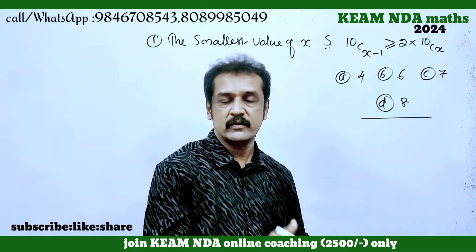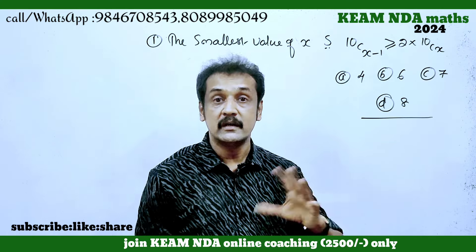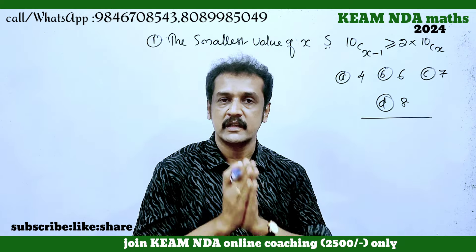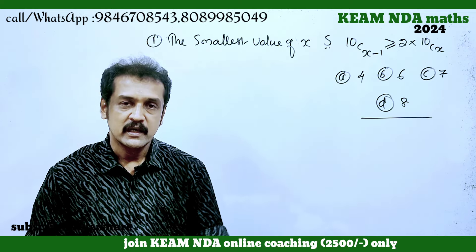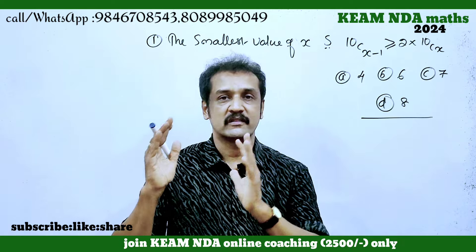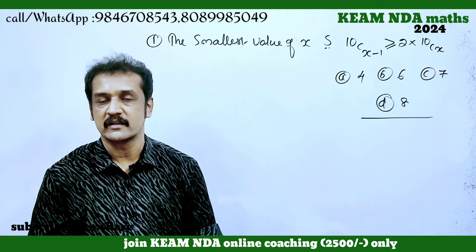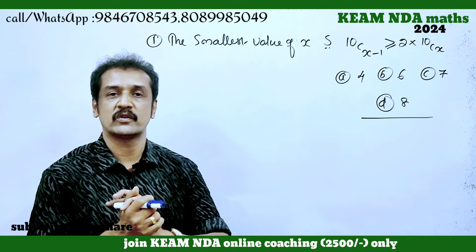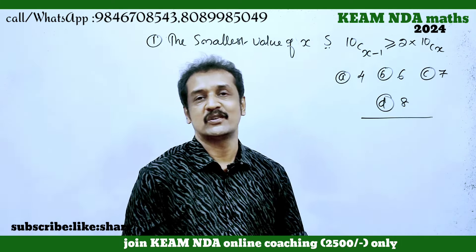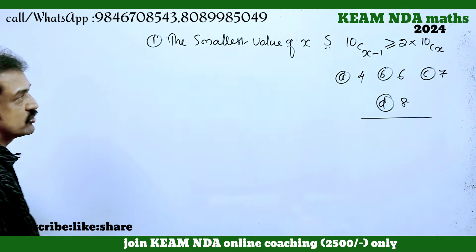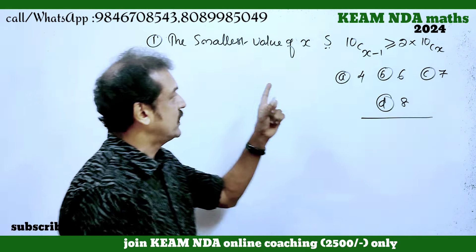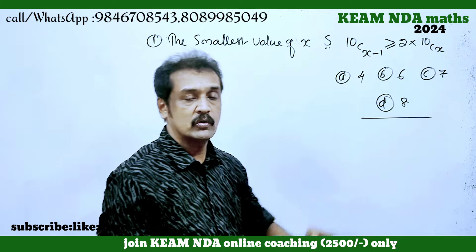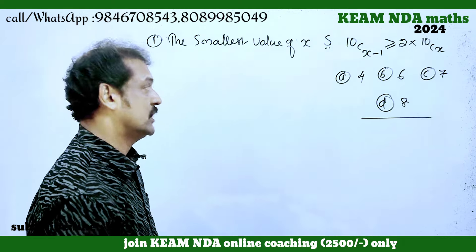If you have an exam, this is a simple method. The problem: find the smallest value of x such that 10C(x-1) is greater than 2 into 10C(x).